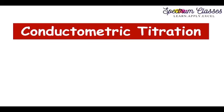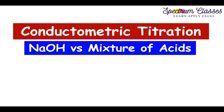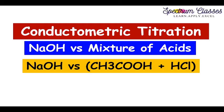Hello everyone, welcome back to Spectrum Classes. Today in this video we are going to perform a lab activity related to conductometric titration. In this conductometric titration we are going to perform a titration of NaOH versus a mixture of acids — CH3COOH, which is a weak acid, plus HCl, which is a strong acid — titrated against NaOH.